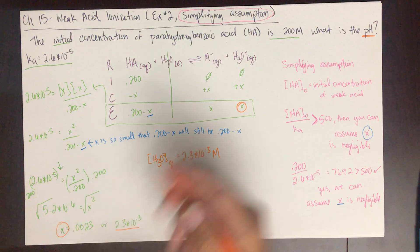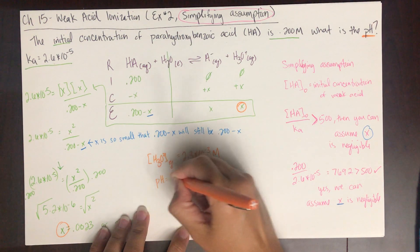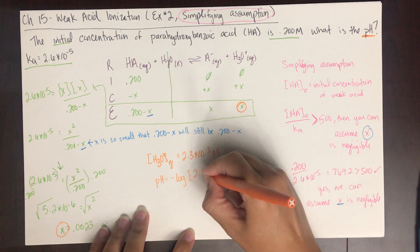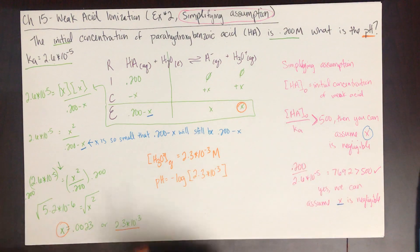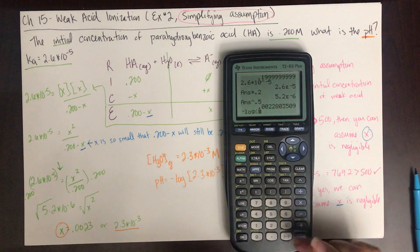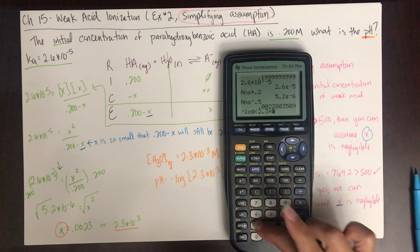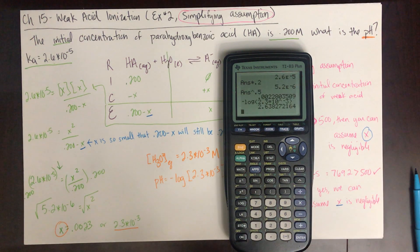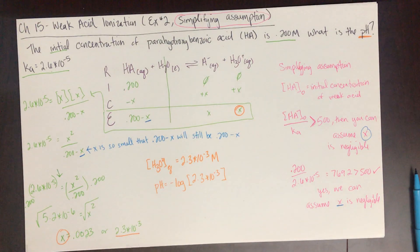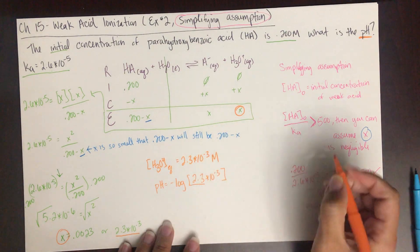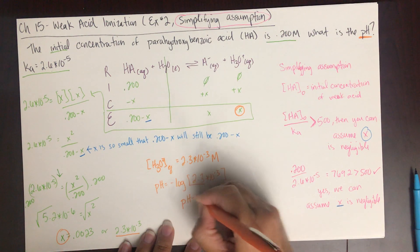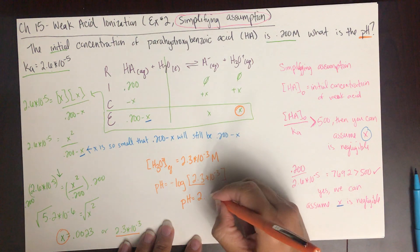Now we use that to solve for pH: pH equals the negative log of the hydronium ion concentration, 2.3 × 10⁻³. The negative log of 2.3 × 10⁻³ is 2.64. Because the concentration has two significant figures, the pH needs two decimal places. pH equals 2.64.